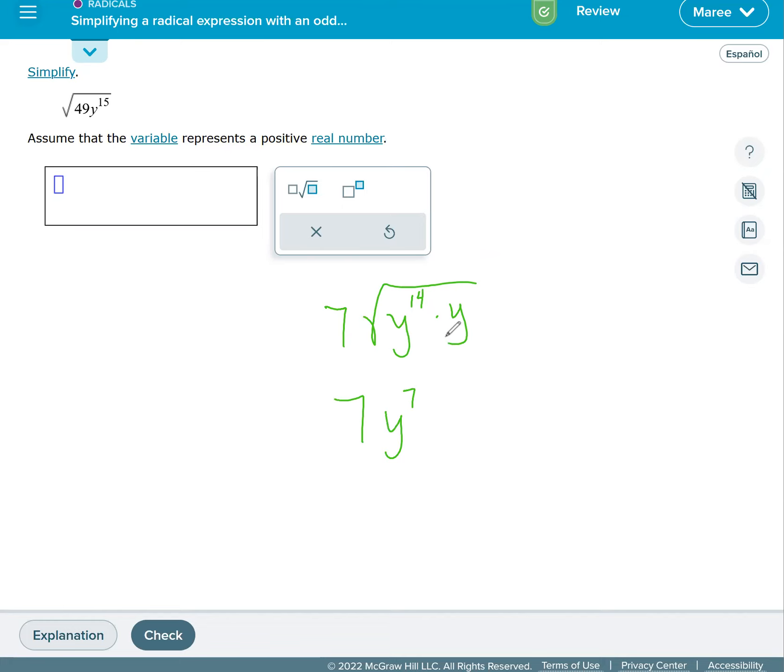And that's our new exponent on y outside of the square root. So we have seven y to the seventh power. It's a lot of sevens there. And then inside we have the square root of y left over.